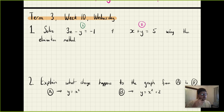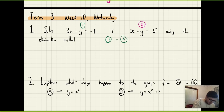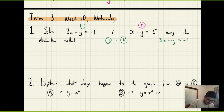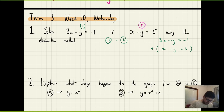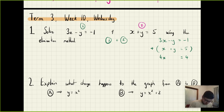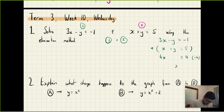The rule to remember: if they have opposite signs, you add; if they have the same sign, you subtract. So I'm going to take equation one and add equation two. I have 3x minus y equals negative one, plus x plus y equals five. So 3x plus x is 4x, minus y plus y is zero, and negative one plus five is four. So 4x equals 4, divide both sides by four, and x equals one.